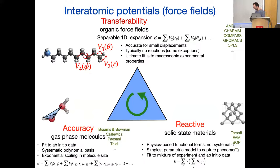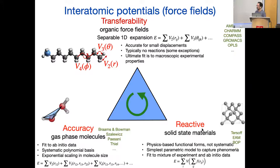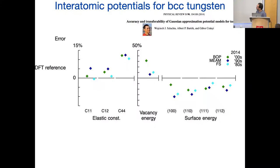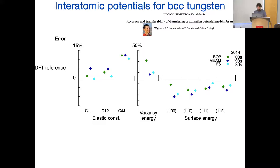What we'd really like is to derive from quantum mechanics the potentials that atoms feel, so that it's linear scaling, doesn't scale exponentially like gas-phase quantum mechanics, it's reactive like we have for materials, and it's transferable like we have for molecules.